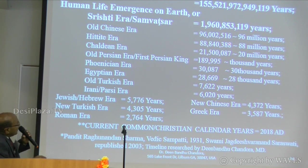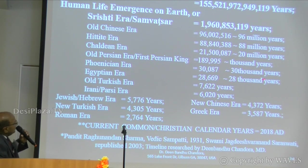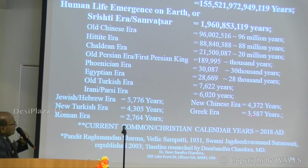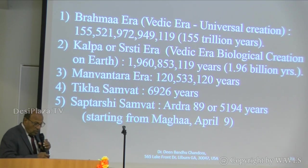Old Chinese eras: 96 million years. Hittite era: 88 million years. These are all plus or minus. Chaldean era: 20 million years. Old Persian era: 189,000 years. Phoenician era: 30,000. Egyptian era: 28,000. Old Turkish era: 7,622. Iranian or Parsi era: 6,020. Hebrew era: 5,776. New Chinese era: 4,372. New Turkish era: 4,305. Greek era: 3,587. Roman era: 2,764. And current age: 2,018, the common Christian calendar.